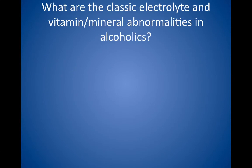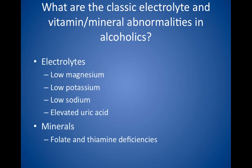What are the classic electrolyte and vitamin or mineral abnormalities in alcoholics? For electrolytes, look for low magnesium, low potassium, low sodium, and elevated uric acid, which can result in gout. For vitamins, look for folate and thiamine deficiencies. Remember that alcoholics tend to have poor nutrition and may develop just about any deficiency.